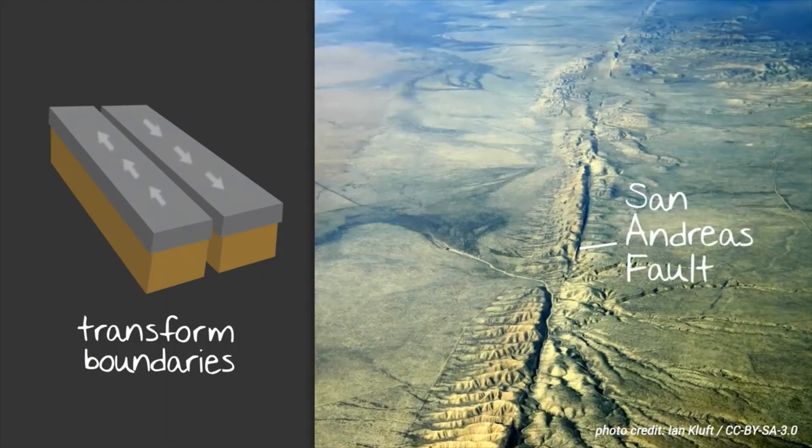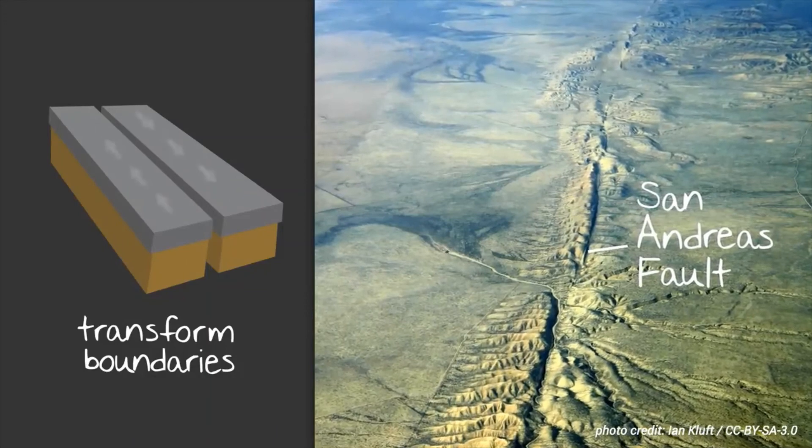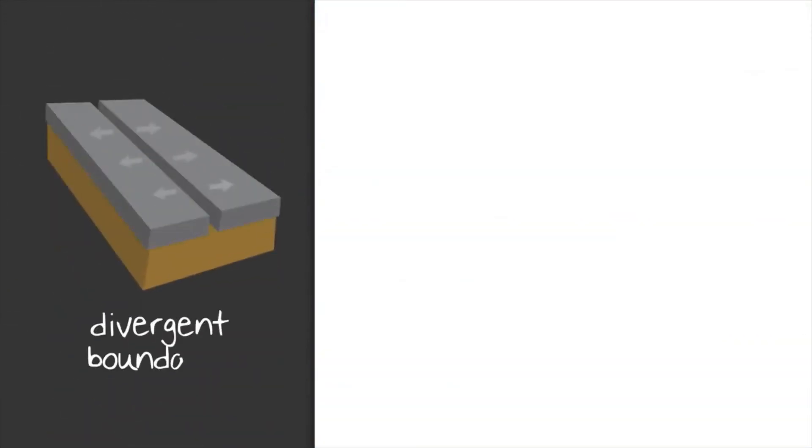The San Andreas Fault System is one of the largest transform boundaries in the world, which is why that area has more than its fair share of seismic activity. That just leaves divergent boundaries.